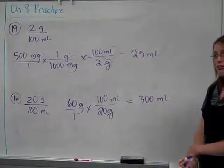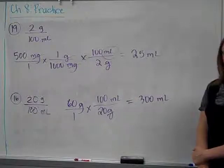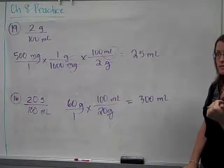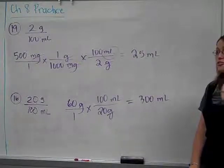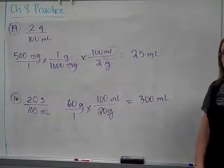But essentially, you have about five different types of problems. Diluting a stock solution, so you'll see 2%. Writing the strength, in general, grams over milliliters, or milliliters over milliliters.